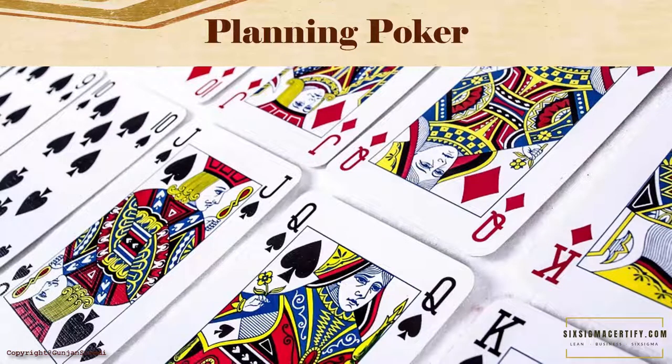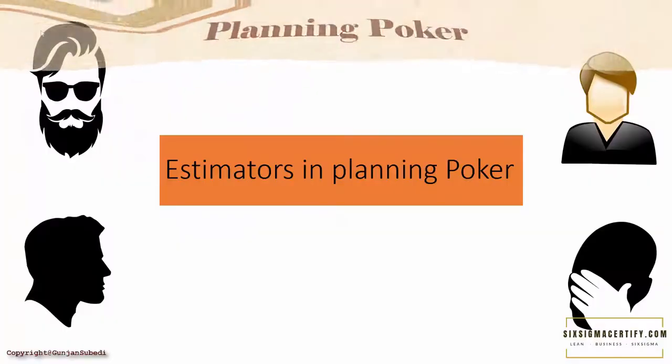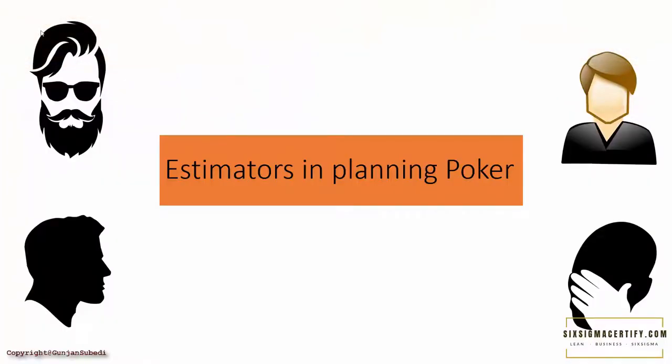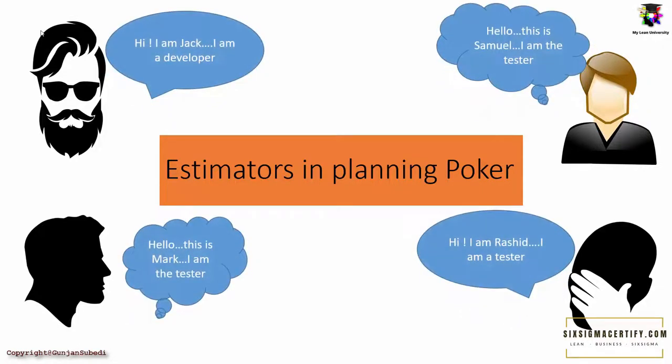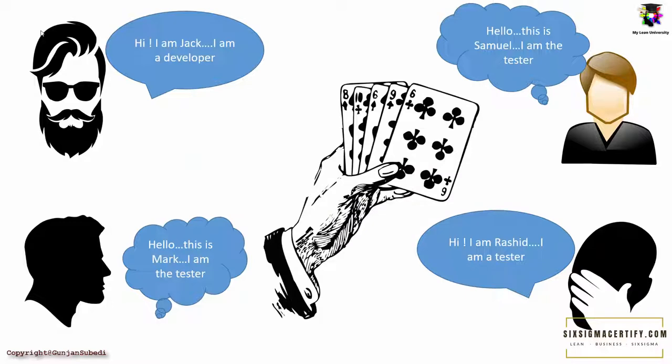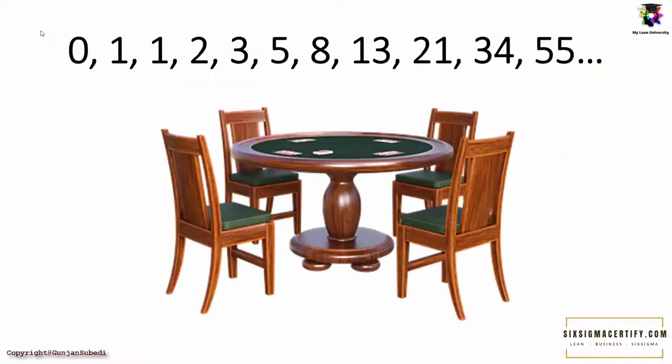In planning poker, we try to reach consensus in a slightly different way than voting. Here there are estimators who are the members of the team, and this should also include the developers and testers. These estimators are handed a deck of cards with some predefined and agreed set of numbers, usually the Fibonacci sequence of numbers.